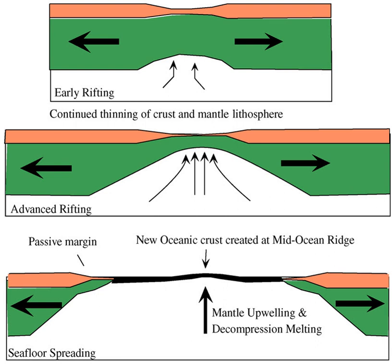Passive margins are characterized by thick accumulations of sediments. Space for these sediments is called accommodation and is due to subsidence of especially the transitional crust. Subsidence is ultimately caused by gravitational equilibrium established between the crustal tracts, known as isostasy. Isostasy controls the uplift of the rift flank and the subsequent subsidence of the evolving passive margin, and is mostly reflected by changes in heat flow.